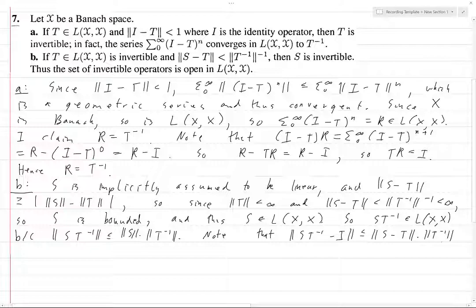This is less than or equal to norm of (S minus T) times T inverse. Why is that? We just factored out the T inverse here. And what is this less than? We know S minus T is less than norm of T inverse inverse, and that times T inverse is 1. So this is less than 1.